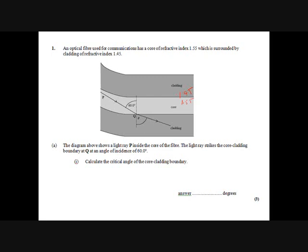Calculate the critical angle. So n1 sine theta 1 equals n2 sine theta 2, but remember the condition for total internal reflection is that theta 2 equals 90 degrees, so sine theta 2 equals 1.